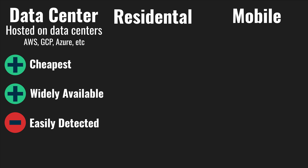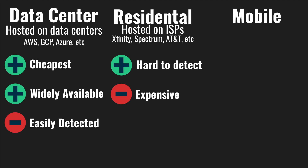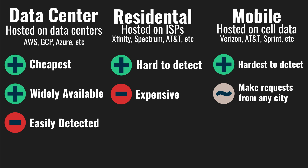Residential proxies are tied to physical locations, typically from internet service providers like Xfinity, Spectrum, and AT&T. These are hard to detect as most real end users will be connecting from an ISP. However, these are fairly expensive as you're indirectly paying for an internet subscription from these ISPs. Mobile proxies use cell providers like Verizon, AT&T, and Sprint. These are the hardest to detect, and companies that offer these usually let you select specific cities to make requests from, which can be advantageous depending on your needs. But these are extremely expensive.